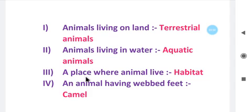A place where animals live - what do we call the place where animals live? Habitat. The place where animals live is called their habitat. An animal having webbed feet - which animal has webbed feet? Camel. Camel has webbed feet.